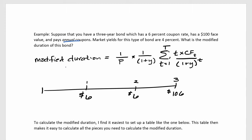I've taken the liberty of writing out the modified duration formula. This is the general method to calculate the modified duration — I say it's the general method because it can handle any pattern of cash flows. This formula is not requiring that the bond is a straight bond with semi-annual coupons.